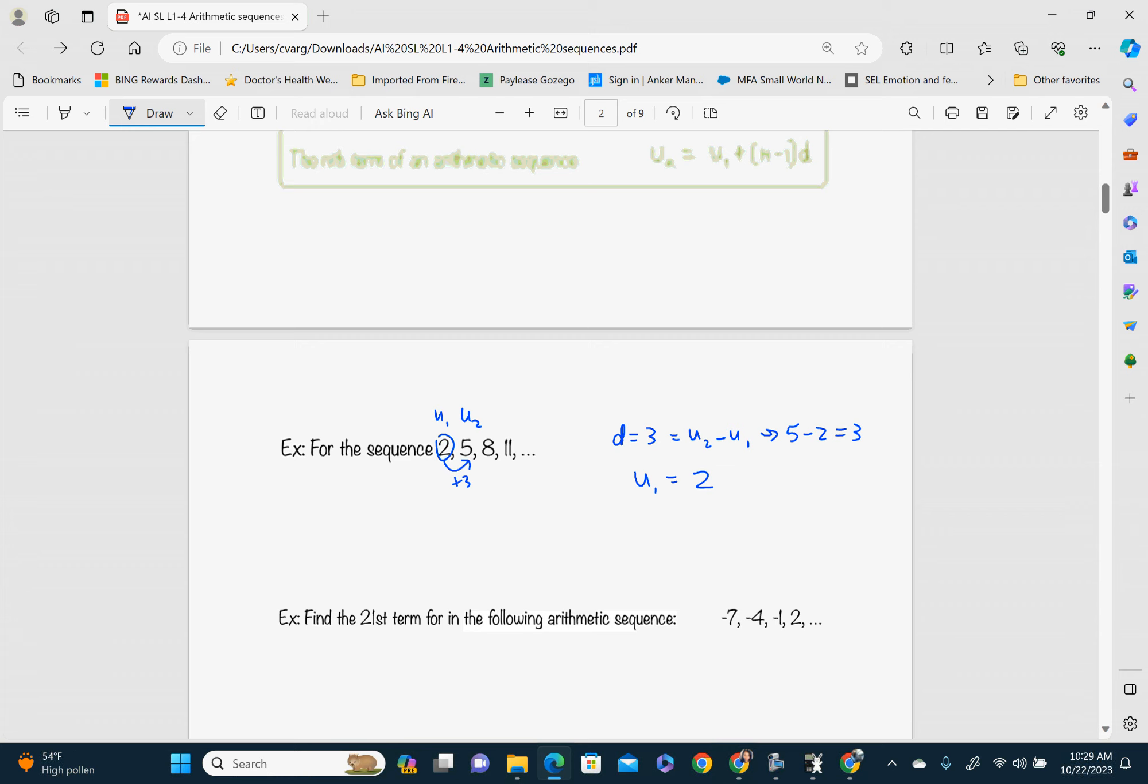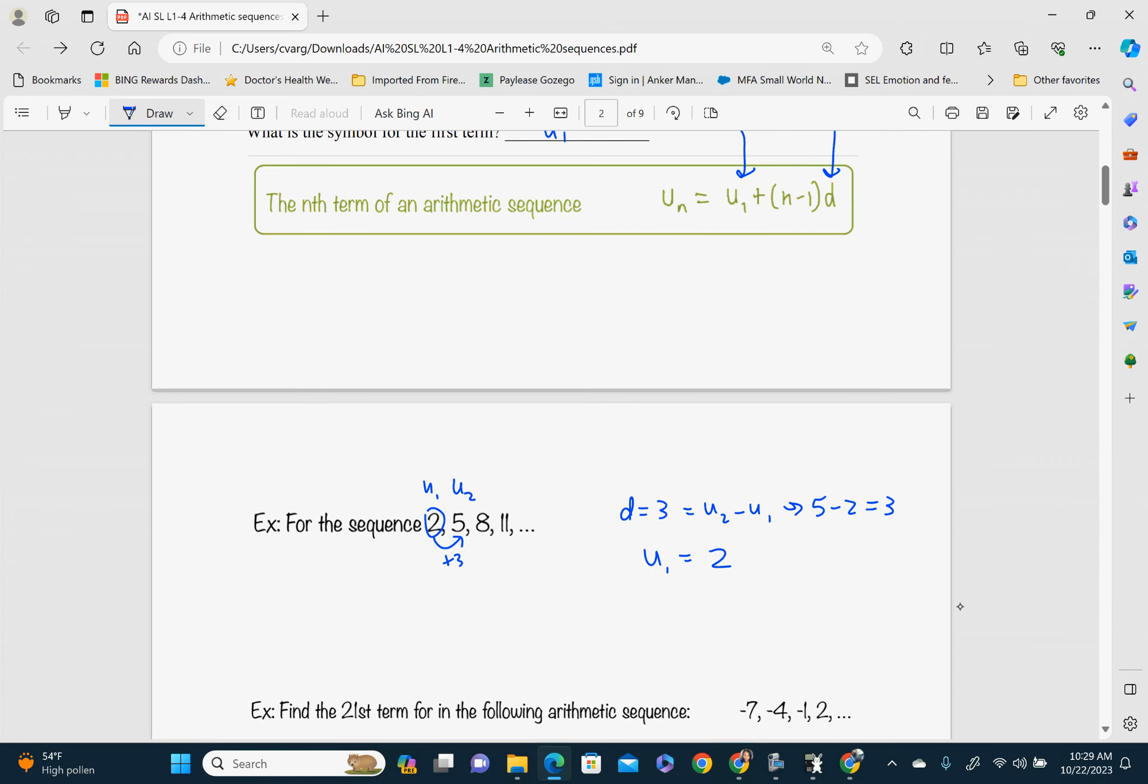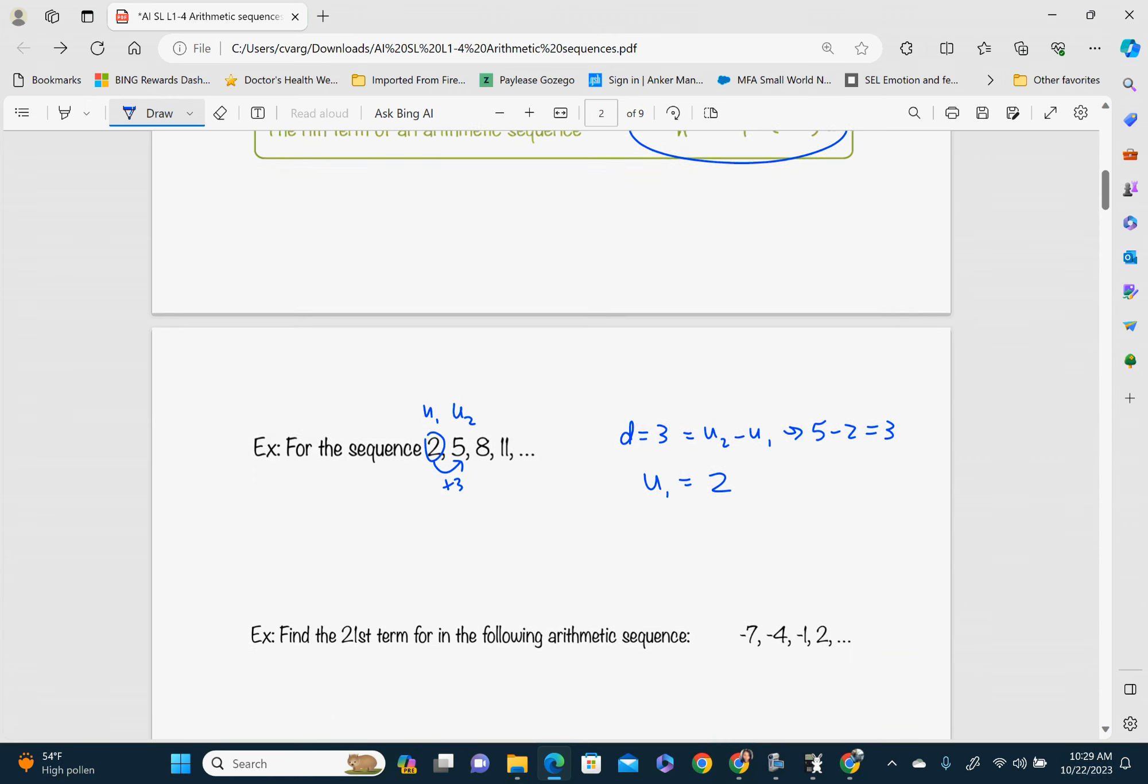And then in your formula booklet, this formula is given, so you don't need to memorize it. This formula is given. So UN, we're looking for this sequence right here. And let's see if I asked you to find the 10th term. That means that we're looking for U10. So our N would be 10.